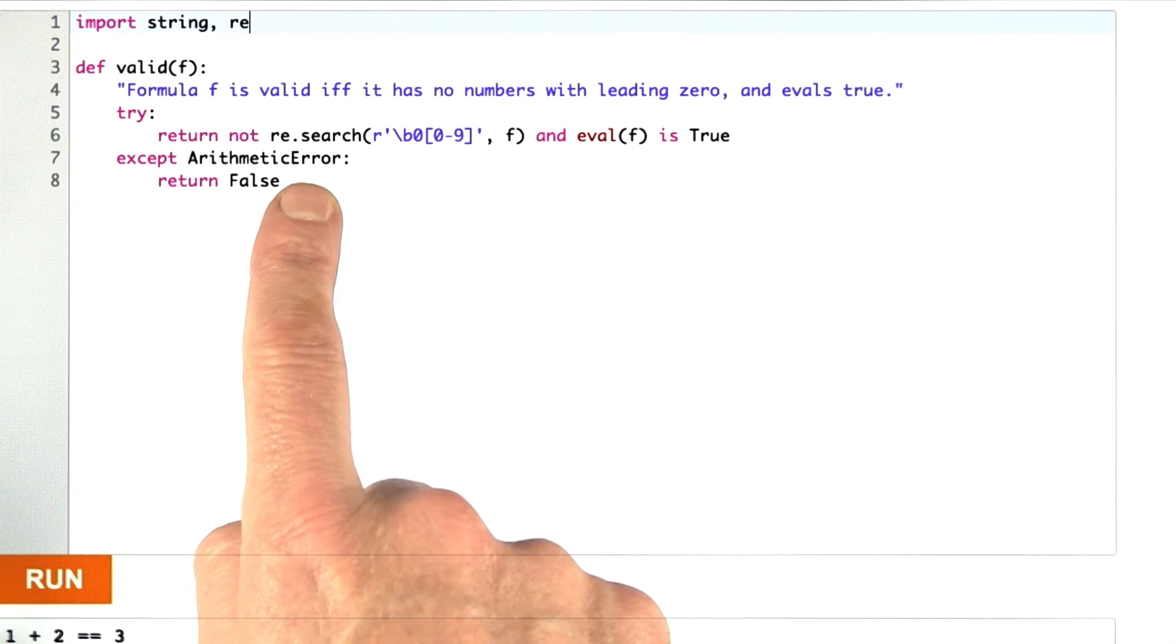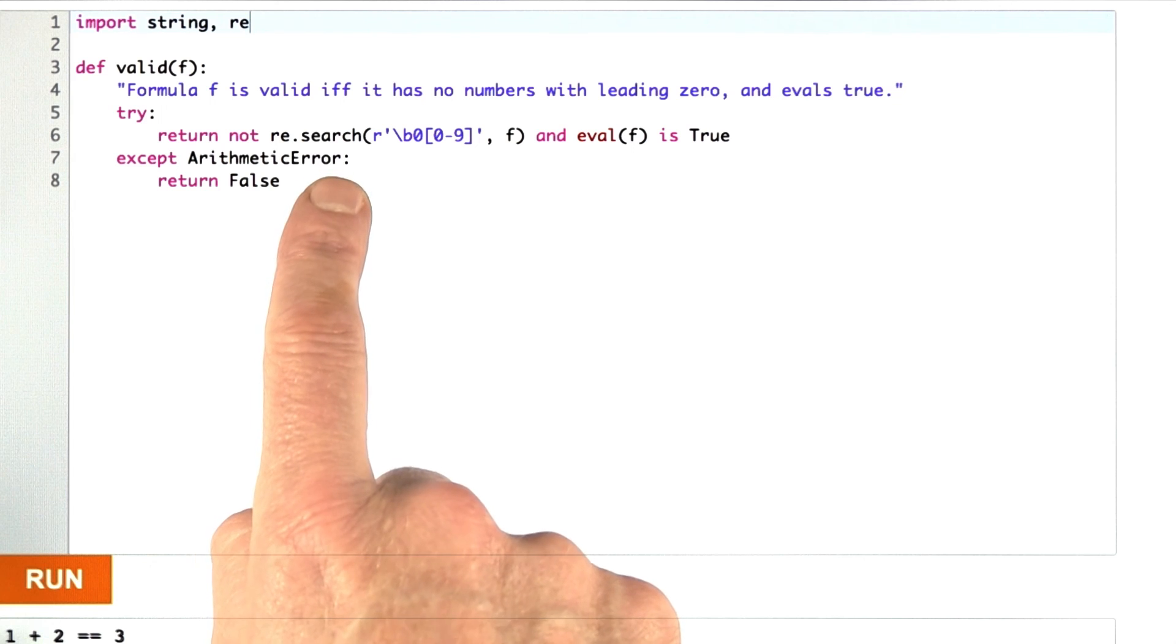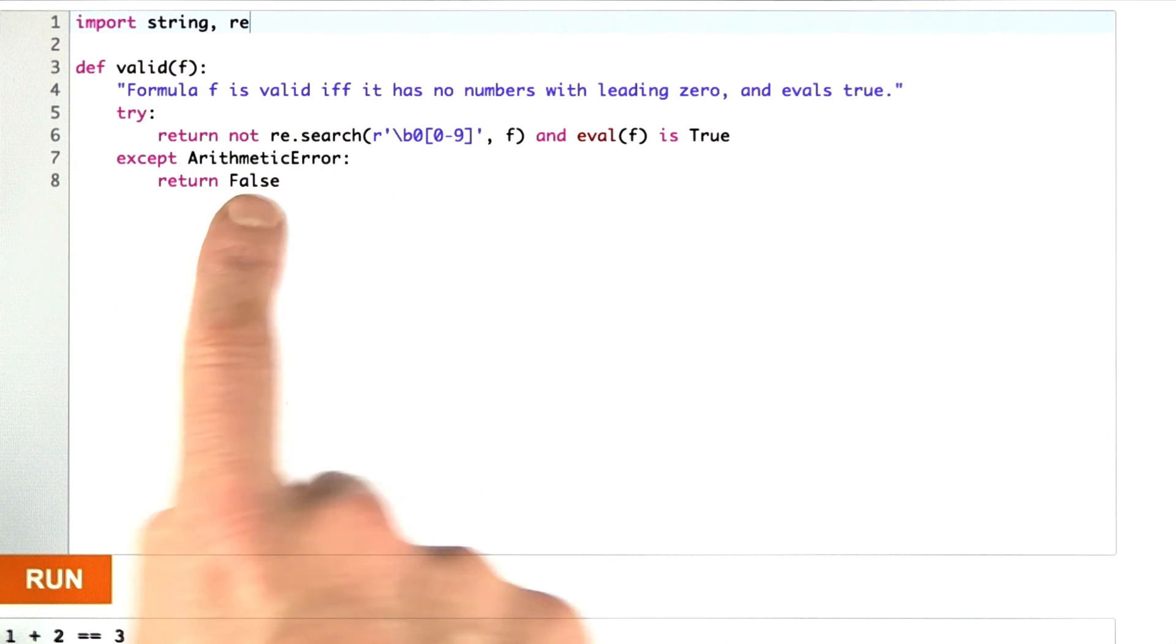You didn't have to do that. It would have been fine to just catch the ZeroDivisionError. And if there is such an error, then you should return false.